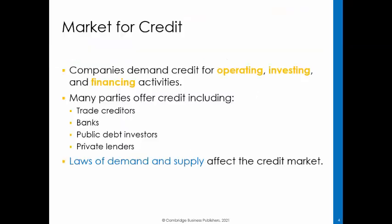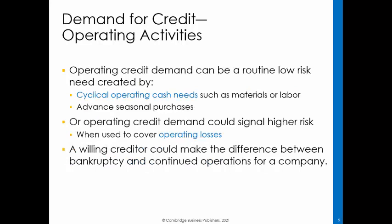In the first learning objective, we will discuss the market for credit by describing the demand and supply of credit. Credit markets are governed by the laws of supply and demand, just like markets for other goods and services. Firms demand credit for operating, investing, and financing activities. Numerous parties are willing to make that demand, including creditors, private lenders, banks, and public debt investors. Many companies have cyclical operating cash needs — for example, companies that manufacture inventory have to pay for materials and labor months before they sell their products and collect revenue.